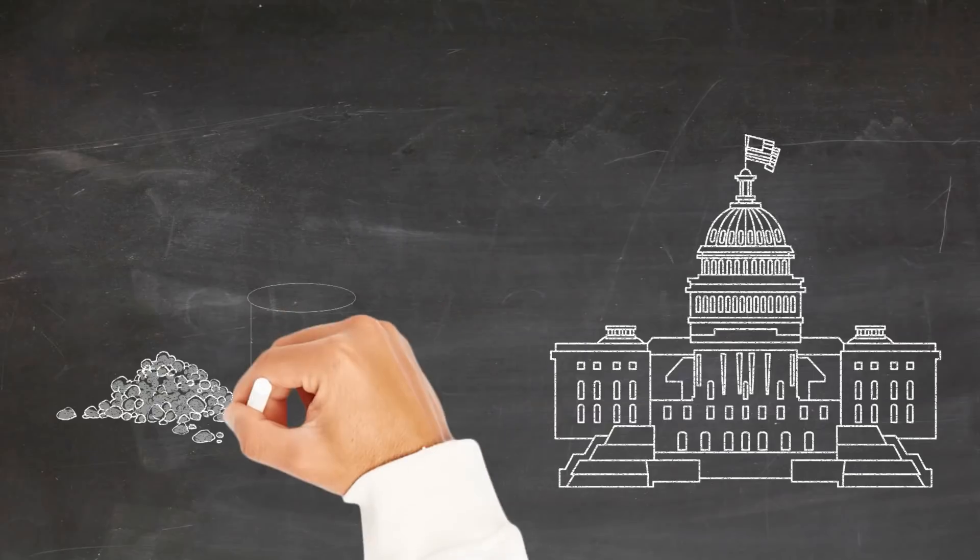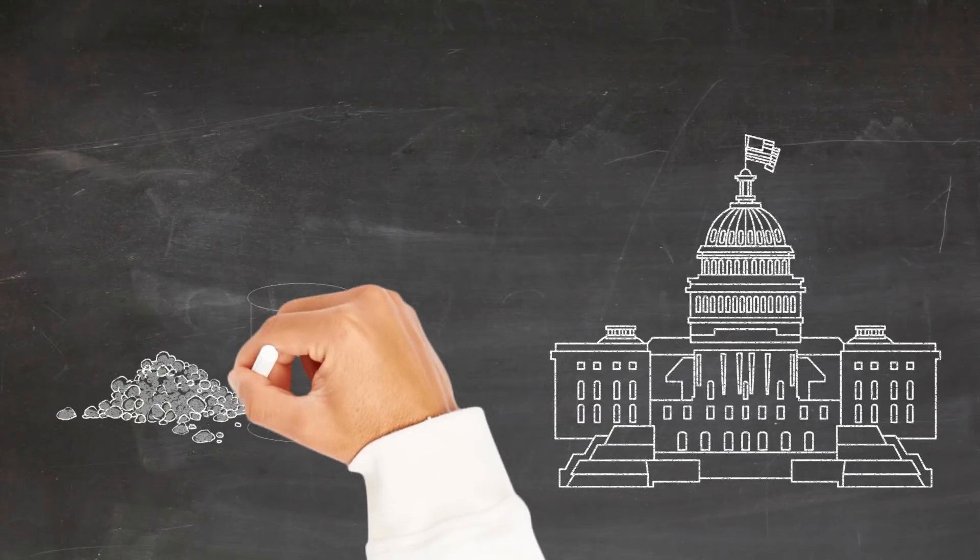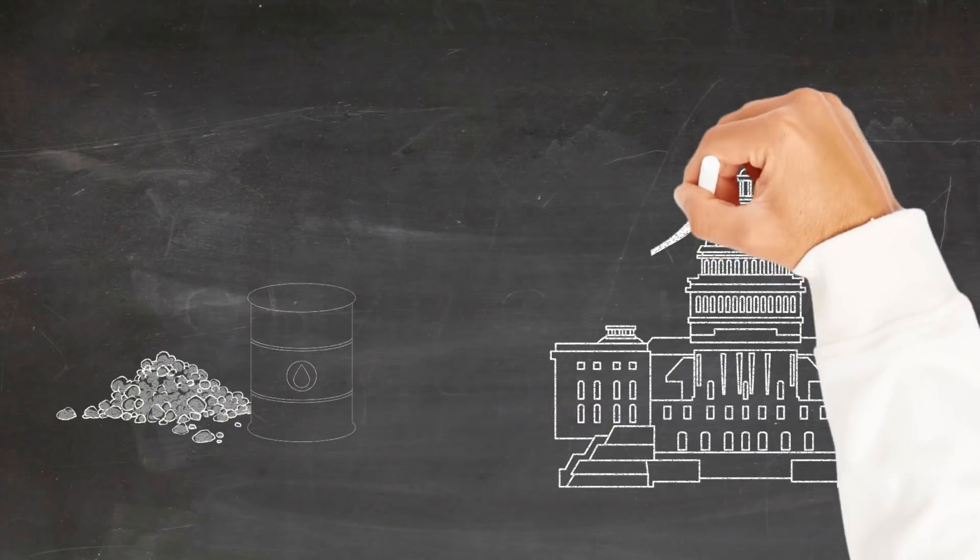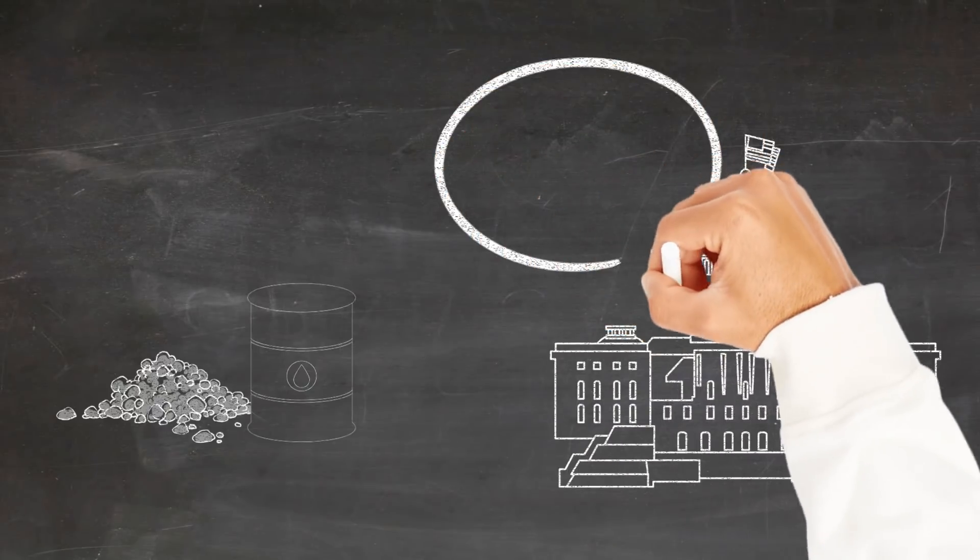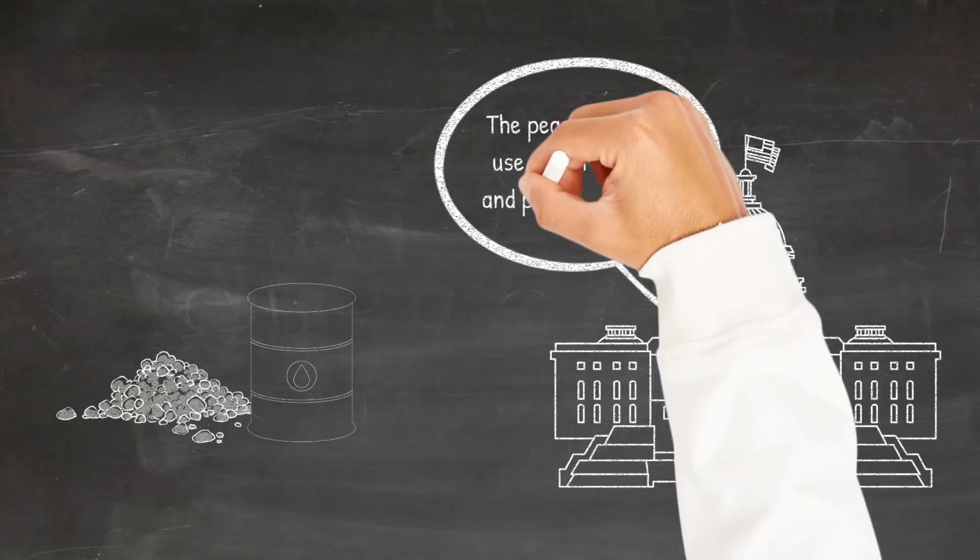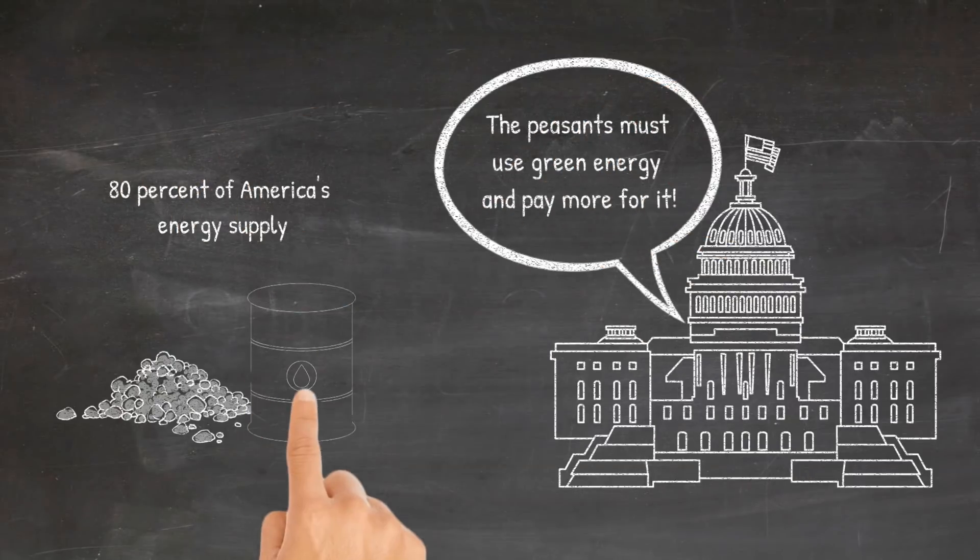Through political mandates, draconian regulations, and trillion-dollar subsidies, they want to rapidly phase out the production and use of coal, oil, and natural gas, which supplies 80% of America's energy.